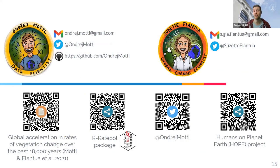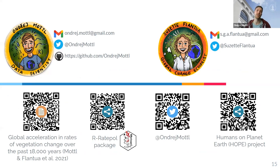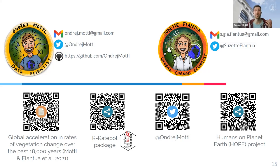I'd especially like to thank Suzette, who was supposed to give this talk today. On this final slide there are four links: the first goes to the paper published in Science; the second to our RRatePoll package, which estimates rate of change and can incorporate age uncertainty, taxonomic standardization, and handles uneven distribution of levels; the third to my Twitter; and the last to a website about the Human on Planet Earth project, which I'm currently working on. Thank you for your attention — I look forward to the discussion.